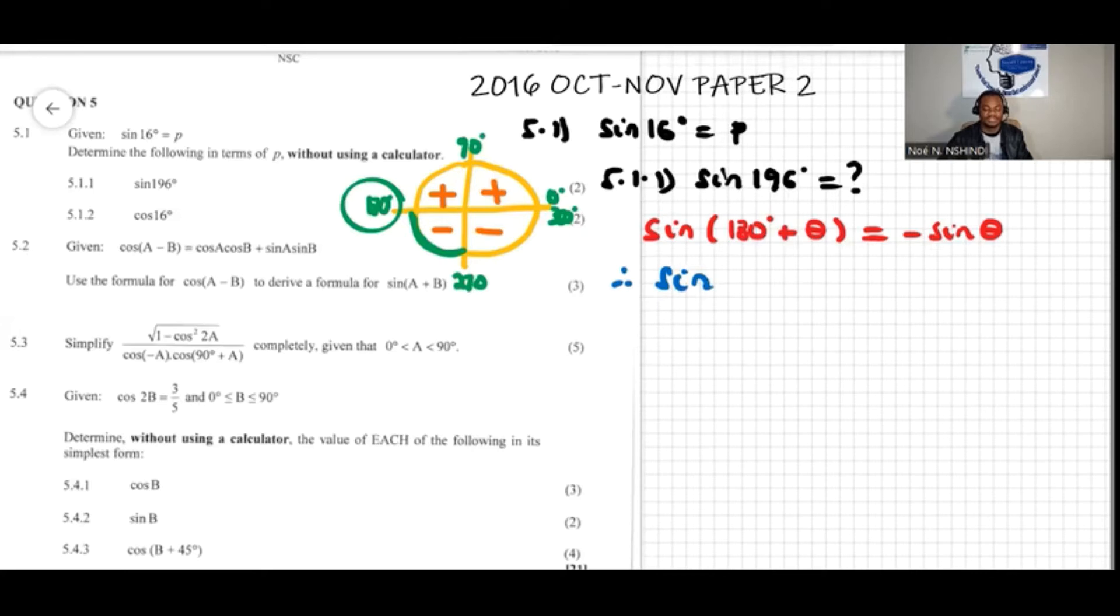So therefore, we can write instead of us writing sine of 196, we can write sine of 180 degrees plus 16, because 180 degrees plus 16, this sum here is equal to 196. And then this is equivalent to say negative sine of 16 degrees, and then sine of 16 degrees is just p.